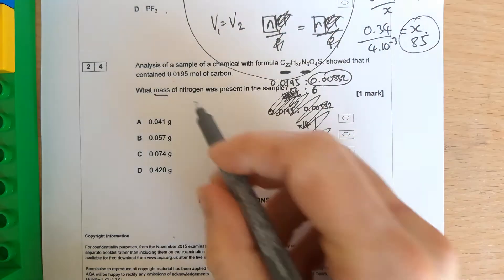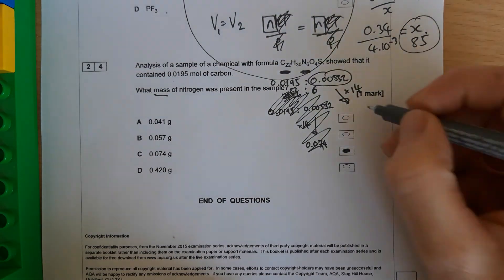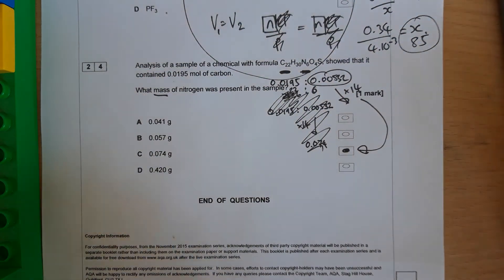This is moles of nitrogen. We want to work out a mass of nitrogen. So you times it by 14, and it gives you this answer, the end.